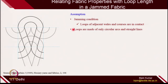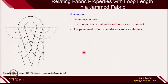The second assumption was that loops are actually made from either a circular arc or a straight line. Whatever distance you observe on the loop is either made up of straight segments — the legs are straight segments — and the head and the feet are actually curved sections. He defined these assumptions before deriving the relationship. Once you define that the fabric is perfectly jammed and either circular arcs or straight segments are observed, he started deriving those relations.